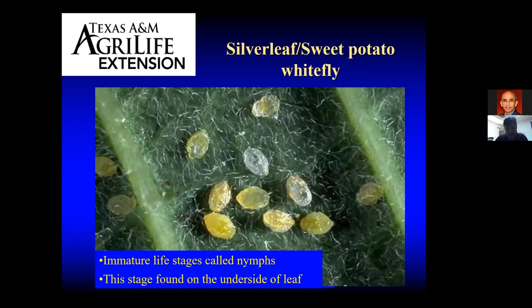This is that immature nymph stage I mentioned. As you can see, it looks totally different than the adult stage — you wouldn't even suspect these develop into an adult whitefly, but they do. They're sessile or immobile, so once they're there, they basically attach to the underside of the leaf and with their piercing and sucking mouthparts draw plant juices for nourishment. You're going to find this stage exclusively on the underside of the leaves.